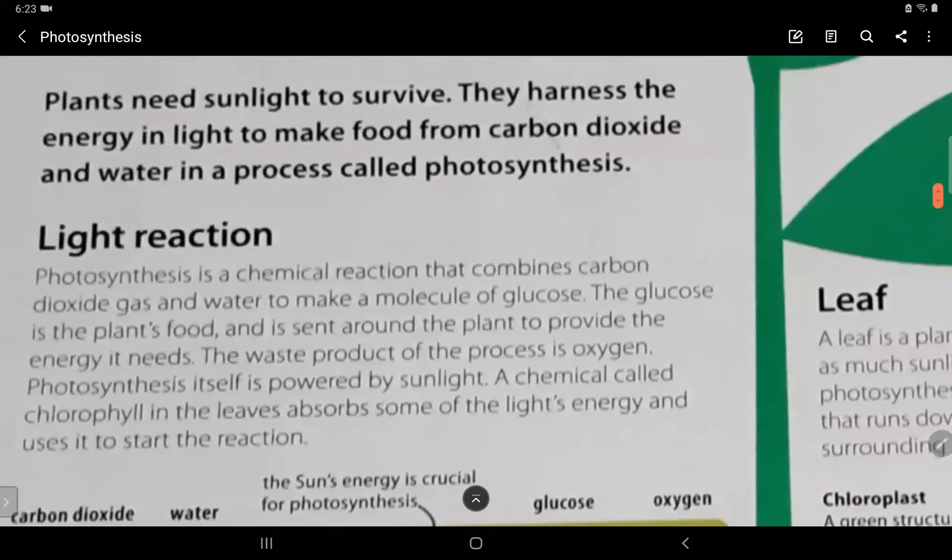Now let's read about the light reaction. Photosynthesis is a chemical reaction that combines carbon dioxide gas and water to make a molecule of glucose. The glucose is the plant's food and is sent around the plant to provide the energy it needs. The waste product of the process is oxygen.